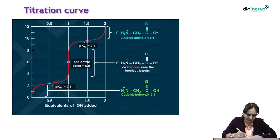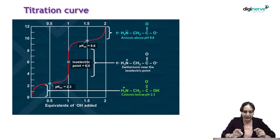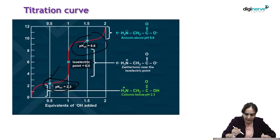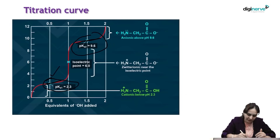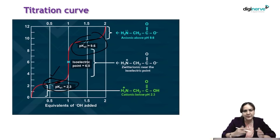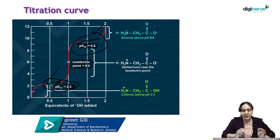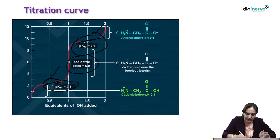Looking at the titration curve for a normal amino acid with one carboxylic acid group and one amino group: the pKa value at the acidic side is 2.3 and the pKa value of the amino group is 9.6. At the region of each pKa value, the amino acid acts as a buffer — added base or acid will be neutralized at that pH. The average of these two pKa values gives the isoelectric point.